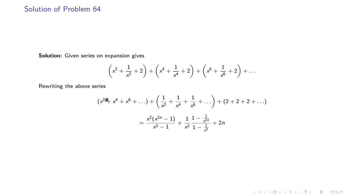We rewrite this as three separate series: x² + x⁶ + ... up to n terms (a GP), then 1/x² + 1/x⁴ + 1/x⁶ + ... (another GP), and then 2 + 2 + 2 + ... up to n terms. We apply the GP formula for the first two series, and the last one equals 2n. I have left the final simplification for you to complete.